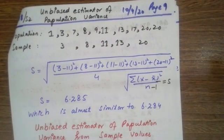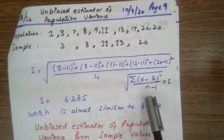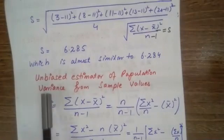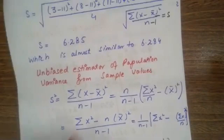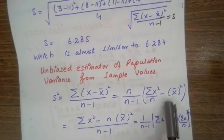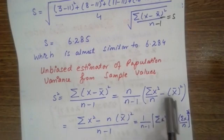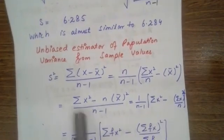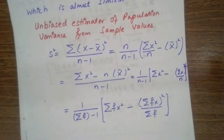So the unbiased estimator of population variance from sample values means you take the original formula and just add minus one to the denominator: Sigma(X minus X̄)² over (N minus 1). When I divided by 4 instead of 5, my answer is 6.285, which is almost identical to 6.284. You can also multiply your original variance by N over (N minus 1) to get this result. There are simple different formats of this formula which you can derive very easily.